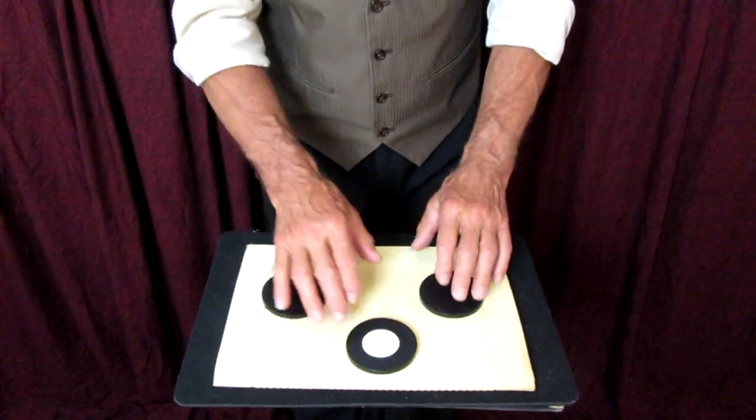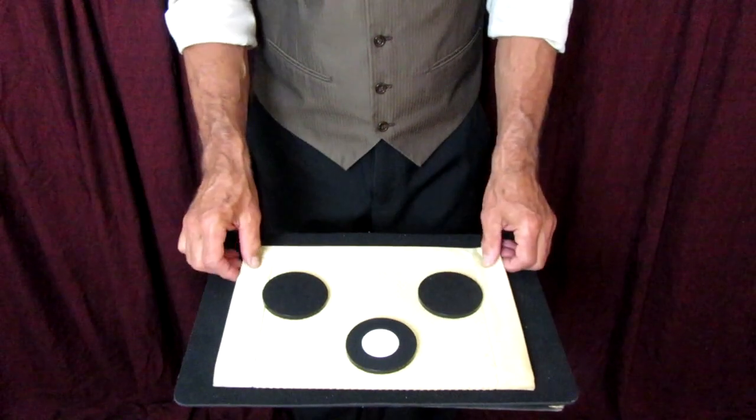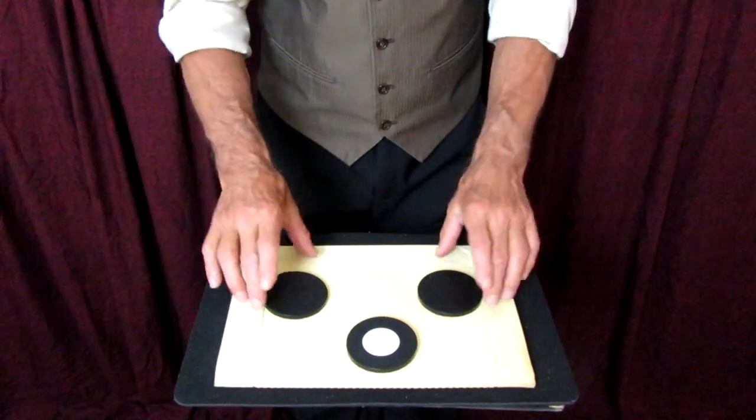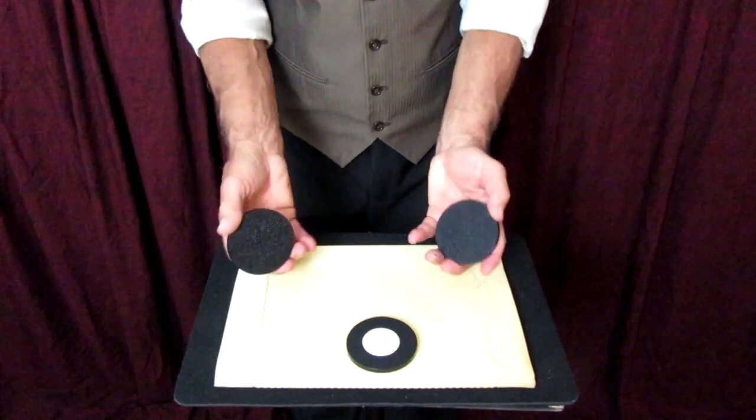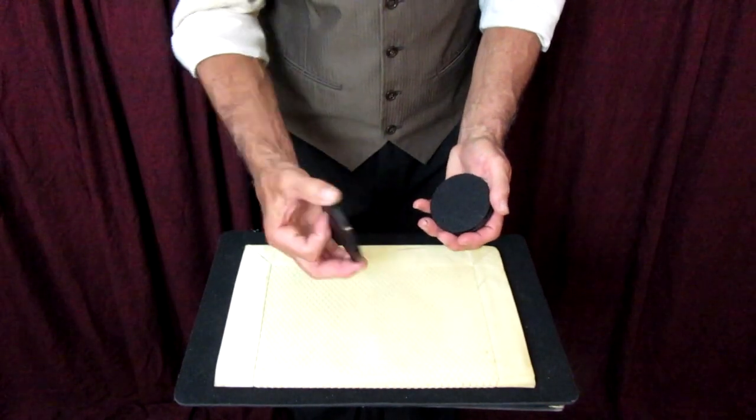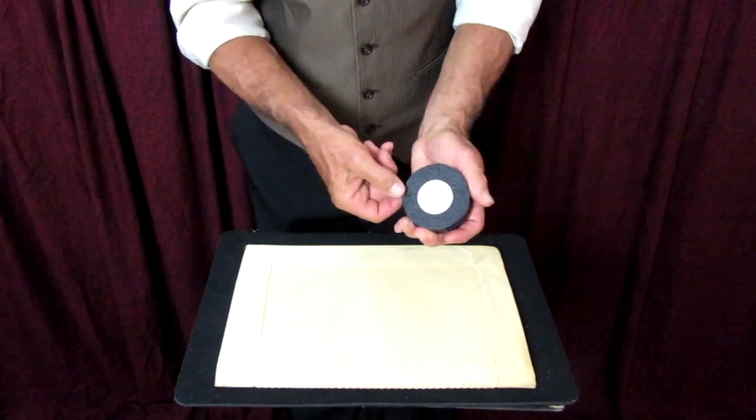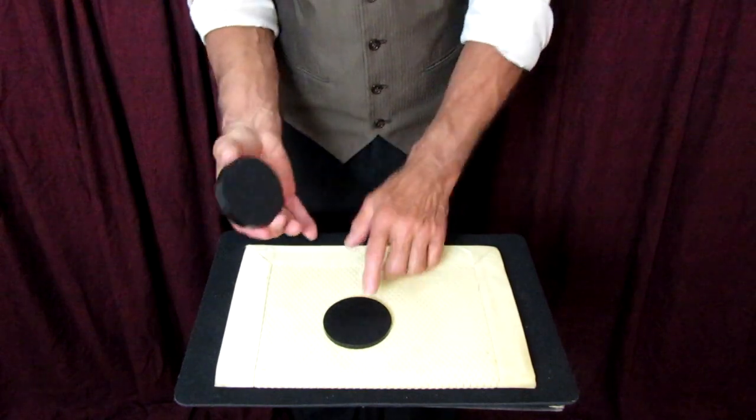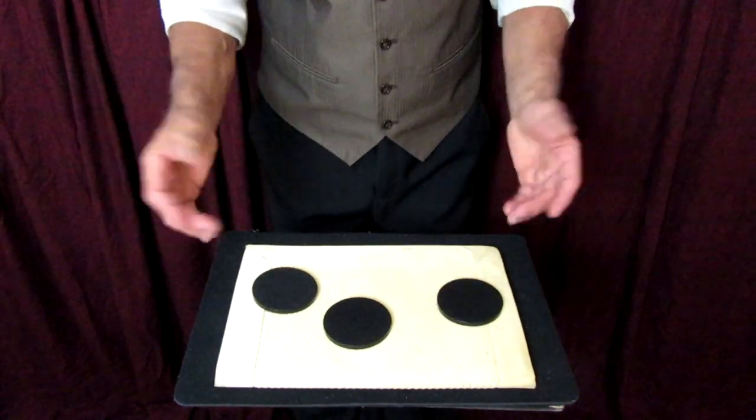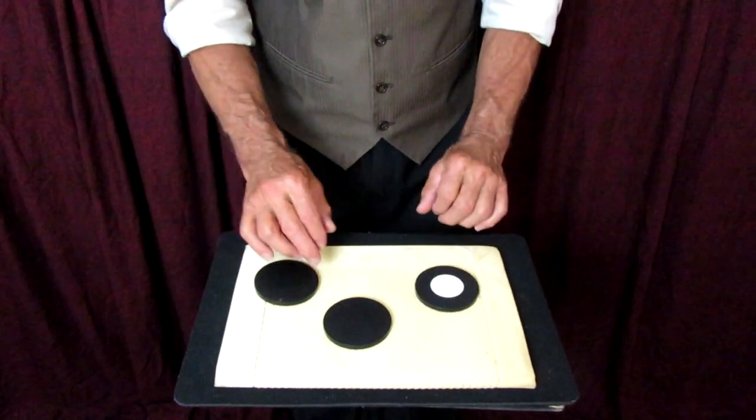One more time, I'm going through the whole motion. Again, displaying the two losers, displaying the winner, keep your eyes on the winner, and you've done the switch.